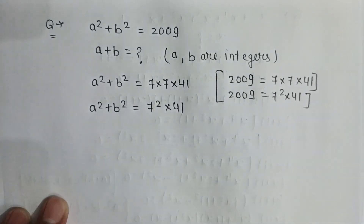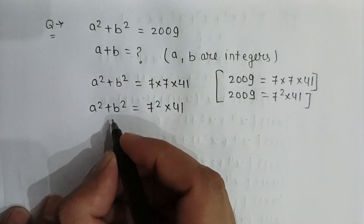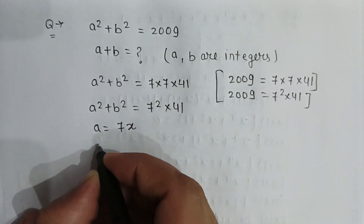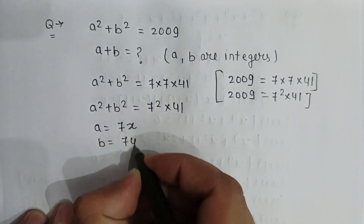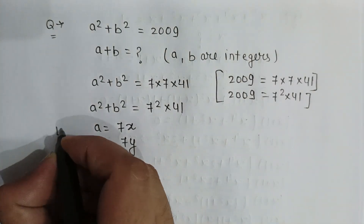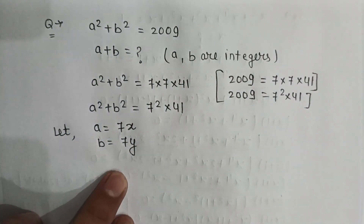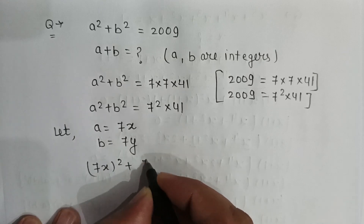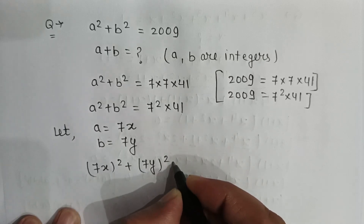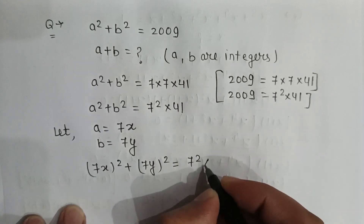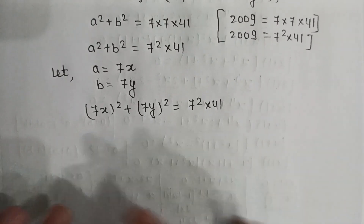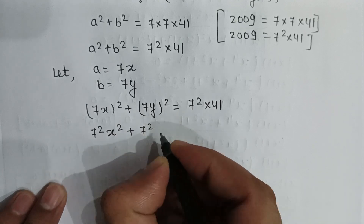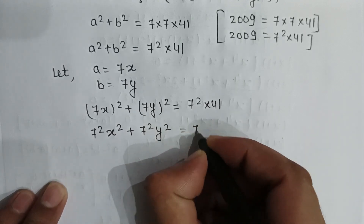If we assume a = 7x and b = 7y, then substituting gives (7x)² + (7y)² = 7² × 41, which is 7²x² + 7²y² = 7² × 41.